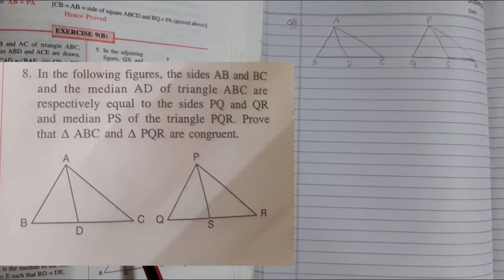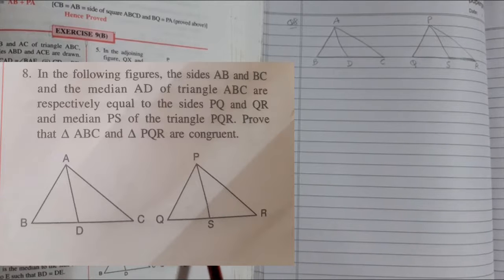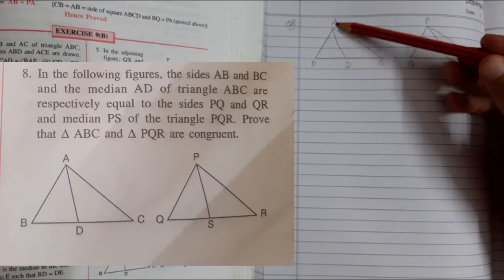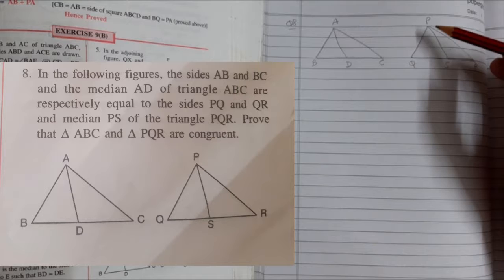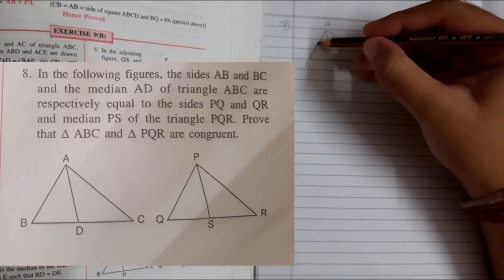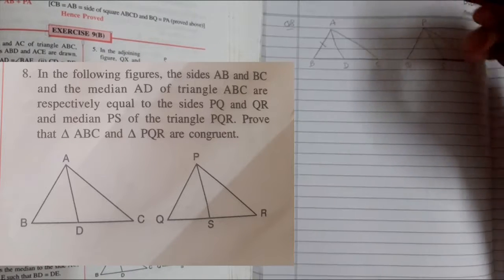We are going to start with question number 8. In the following figure, the sides AB and BC and the median AD of triangle ABC are respectively equal to the sides PQ...